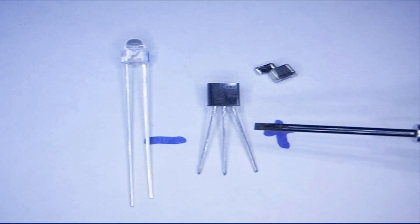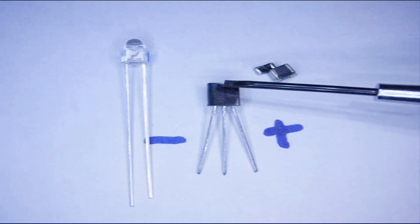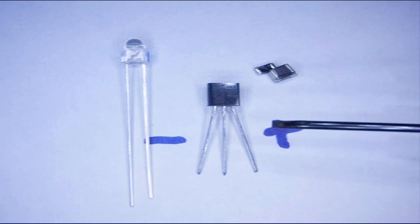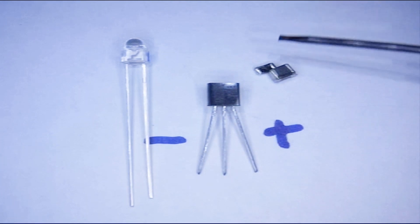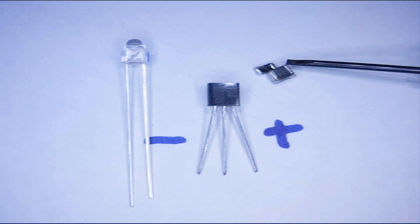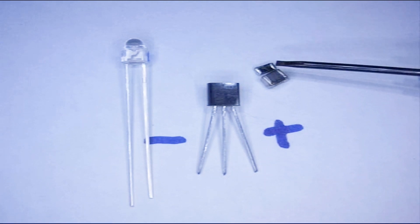This is the negative lead over here and this is the positive lead and we have the flat side up here. Then the center one is the base and these two things are the substitute for the coil. These are surface mount inductors.